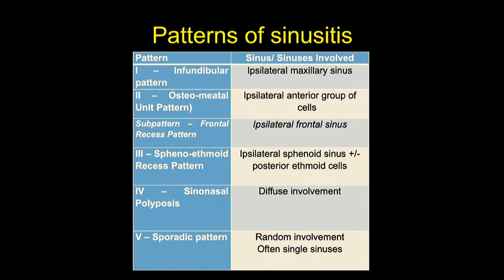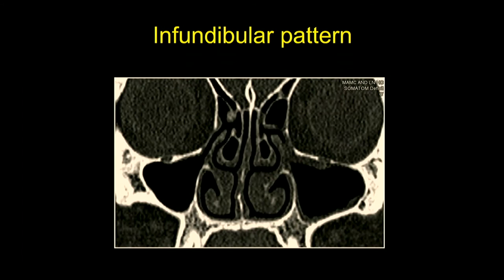As we go from Type 1 to Type 2 pattern, the chances of recurrence after surgery increase and the surgery becomes more complex — so this helps us prognosticate. Type 4 is sinonasal polyposis, which is diffuse involvement of the sinuses, usually treated medically with surgery reserved only for refractory cases and very difficult to operate upon. Type 5 is the sporadic pattern, which is random involvement of often single sinuses.